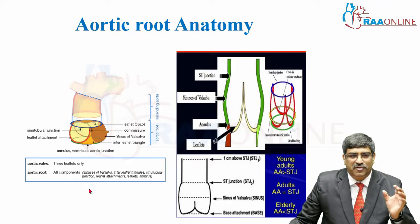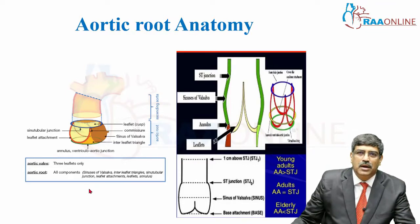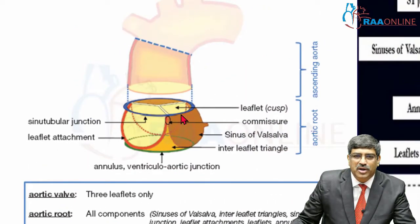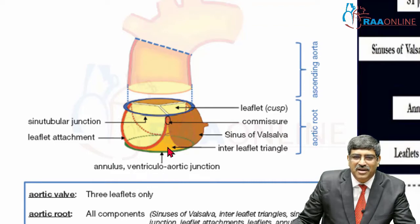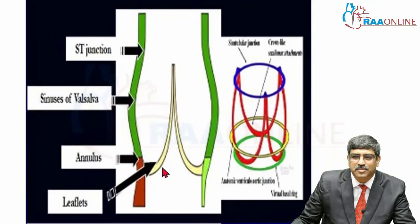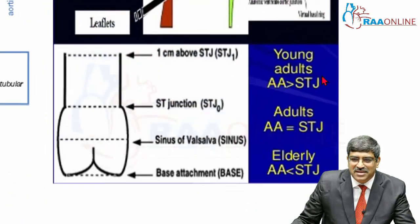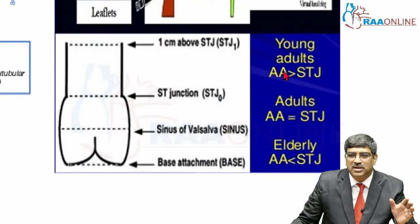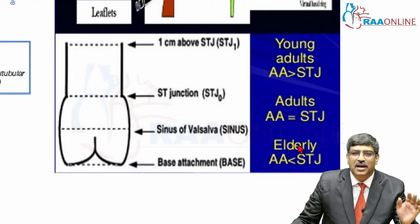Before going into the physiology of Sinus of Valsalva, a little bit of anatomy of the aortic root is very important. This is the aortic root — here you can see the aorta and this part is the ventricle. There are three leaflets of the aorta, an inter-leaflet triangle, three sinuses of Valsalva, and the coronary artery origins. The part separating the aortic leaflet from the aortico-ventricular outflow tract is called the annulus. This is the sinotubular junction and this is the aortic annulus. The size of the aortic annulus and the sinotubular junction can vary between young adults and the elderly population.